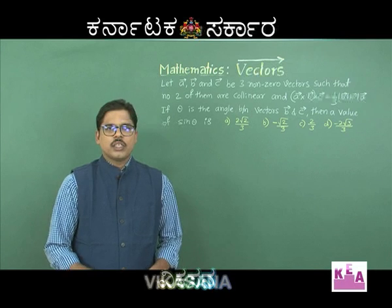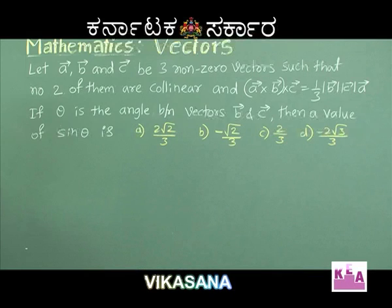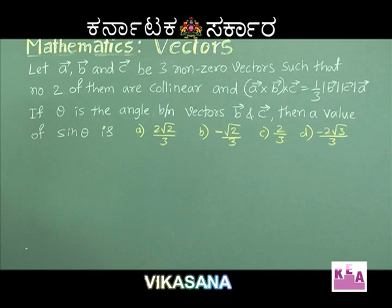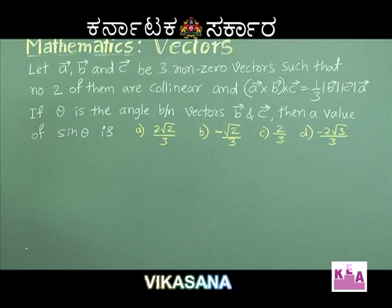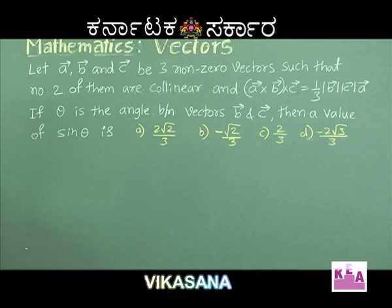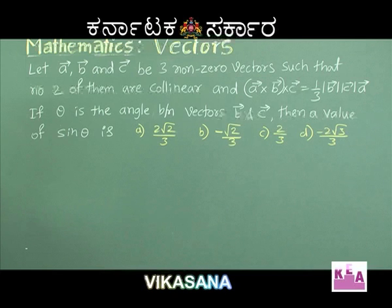Vector Triple Product problem: let vector A, vector B and vector C be three non-zero vectors such that no two of them are collinear. The vector triple product of vector A cross (vector B cross vector C) is equal to (1/3)|B||C| vector A. If θ is the angle between vector B and vector C, find sin θ. Options: A) 2√2/3, B) −√2/3, C) 2/3, D) −2√3/3.